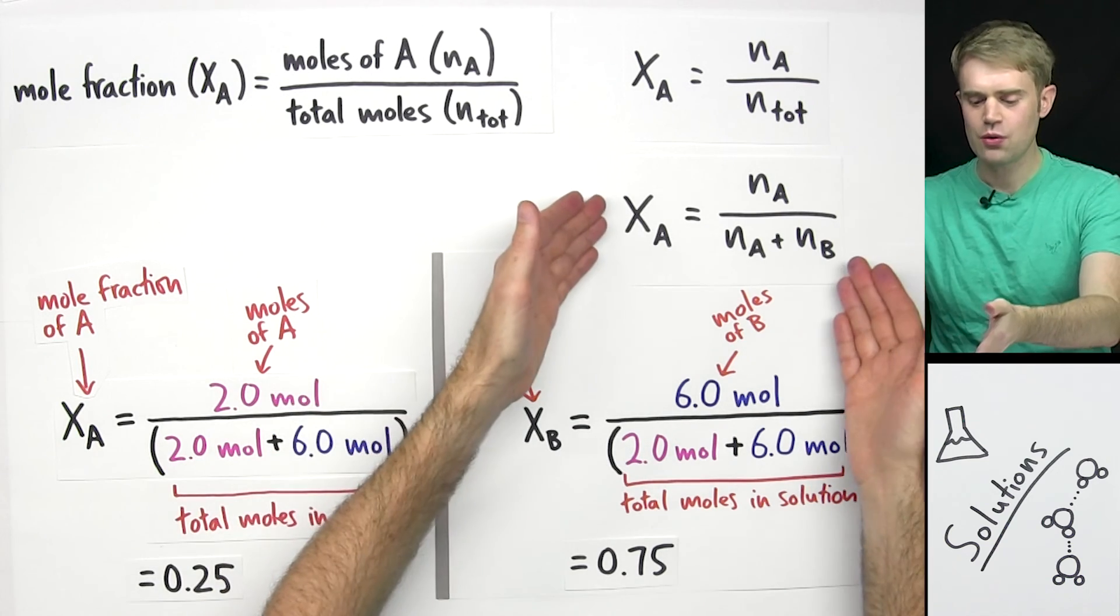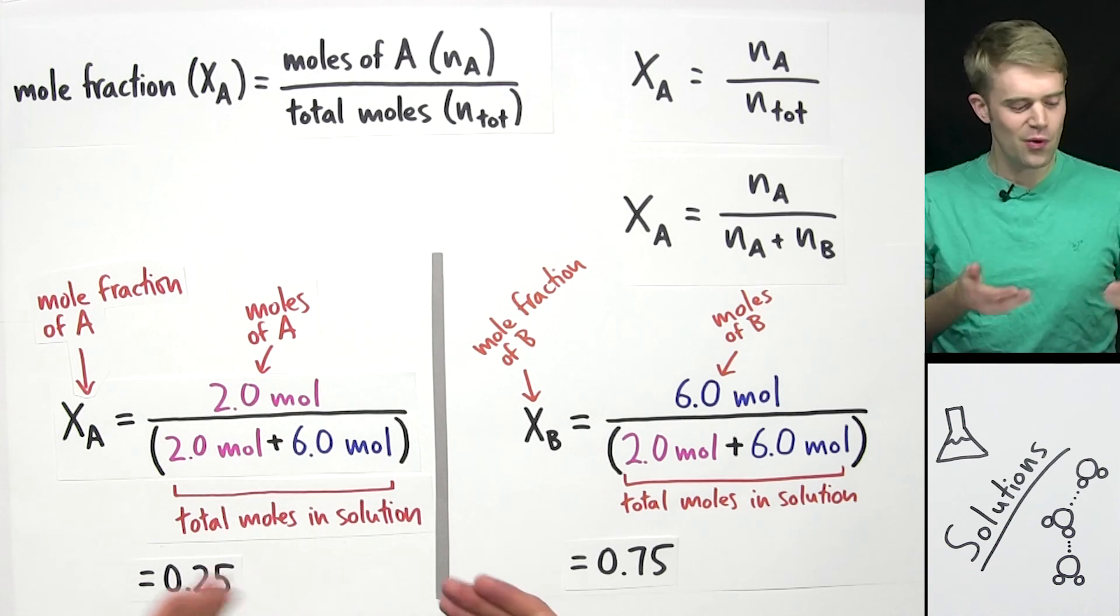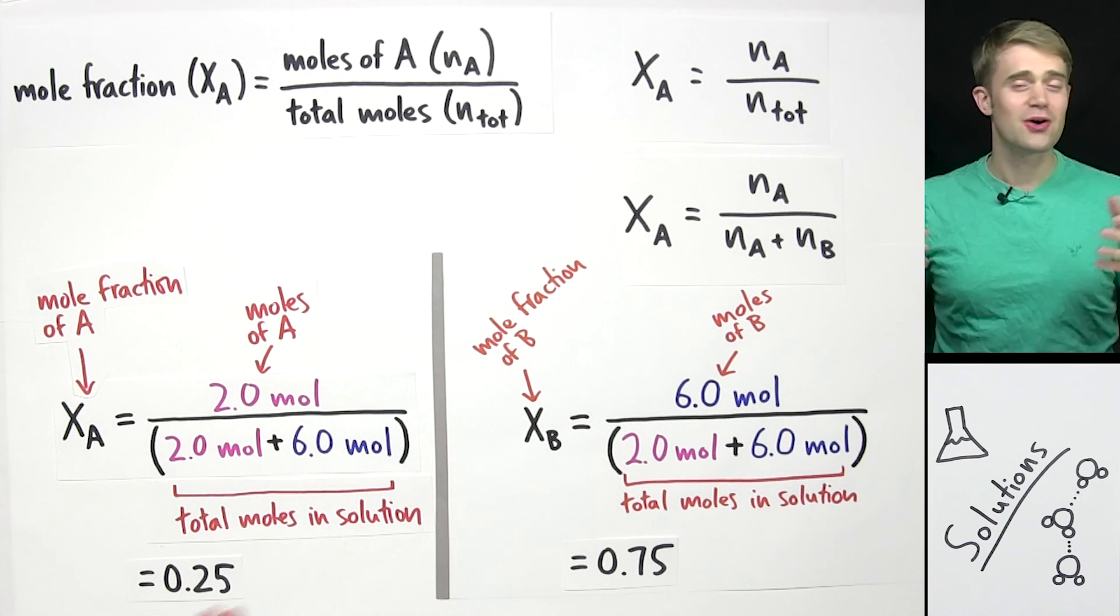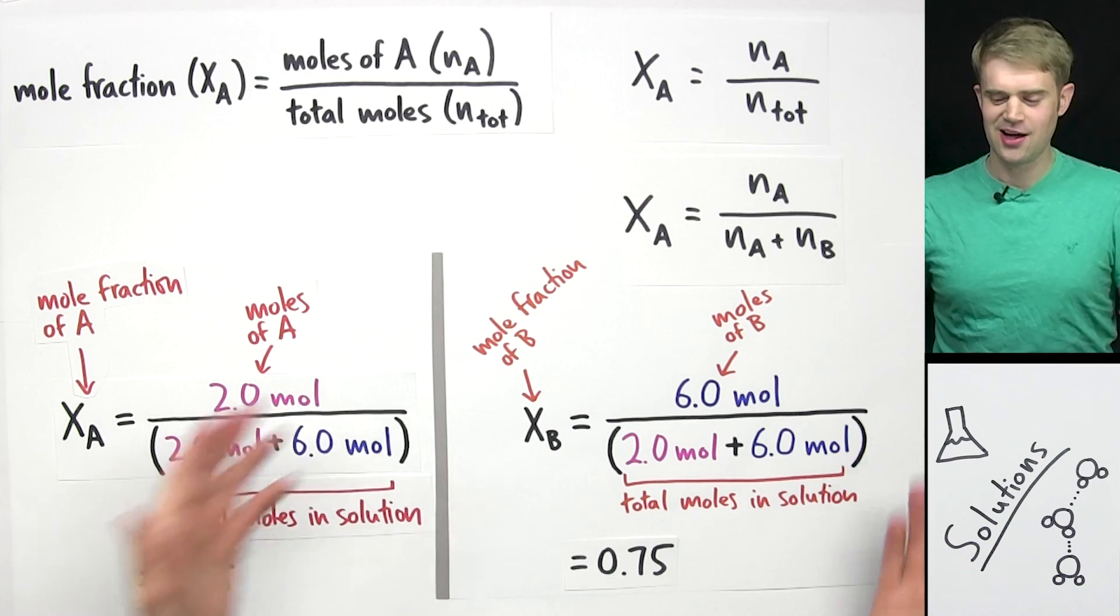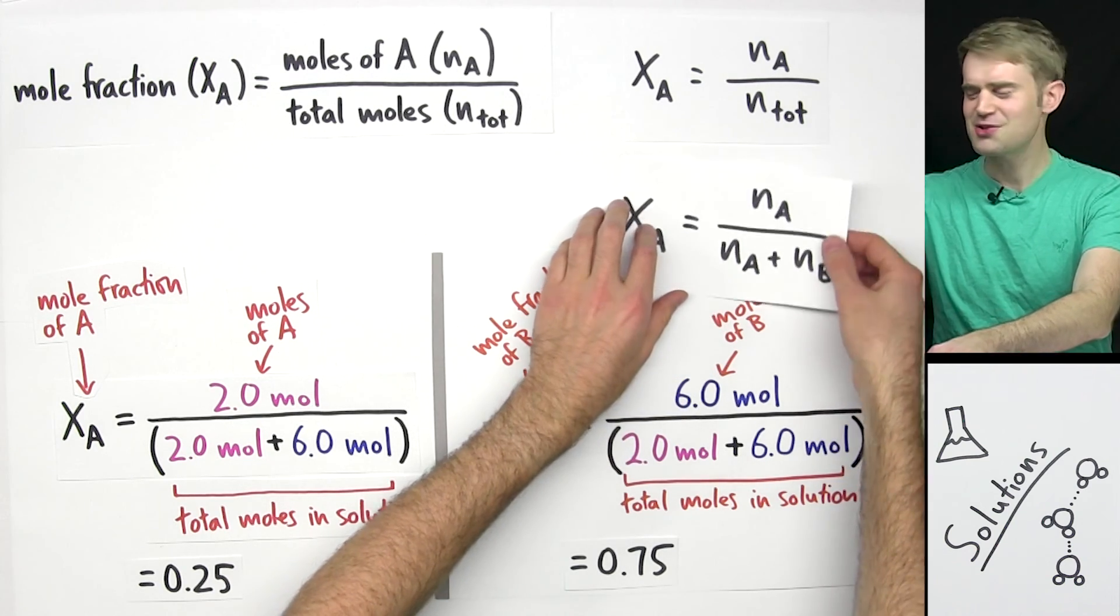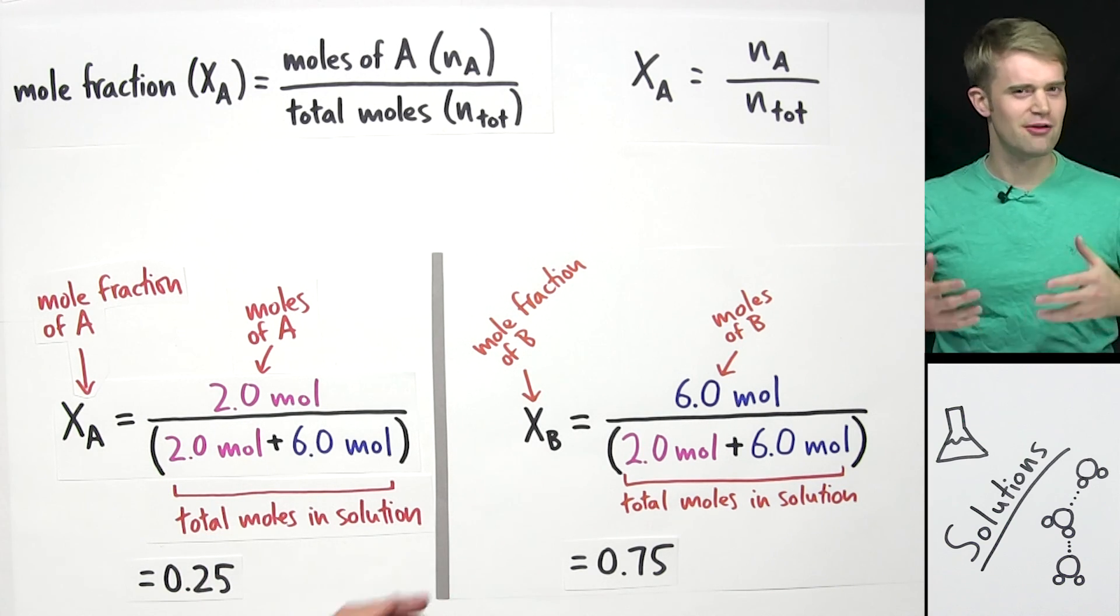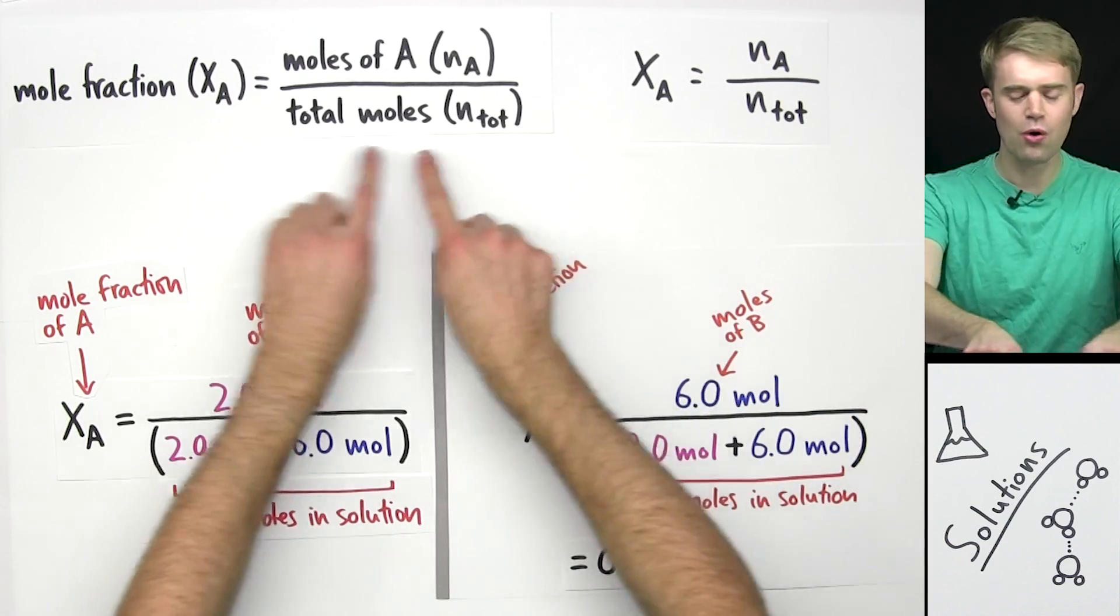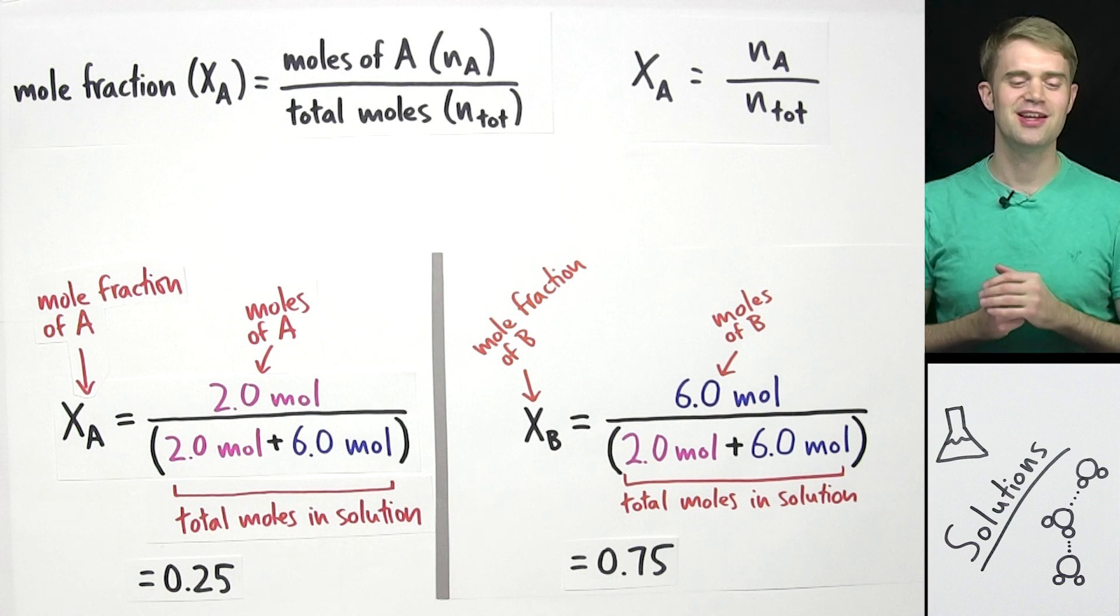Well here is why. This equation only works when you have a solution that has two parts or components. We had two parts in this example. We had A and B, but that's not always the case. There are solutions out there that have three or four or even five different parts, and in that case this isn't a good equation because it only works if you have two components. So that's why I don't like it so much, because we often, or at least sometimes, run into solutions that have more than two components. I like these equations instead that just have the total number of moles in the bottom. These equations work no matter how many different parts or components you have in your solution.